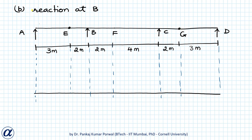Next, we want to draw the influence line diagram for reaction at B. We release the vertical displacement degree of freedom at B and move it by 1 unit. The rest of the structure displaces like a mechanism. Because at A, C and D we have roller or hinge supports, A, C and D will have zero vertical displacements, and segments AE, EBFCG, and GD will remain straight.